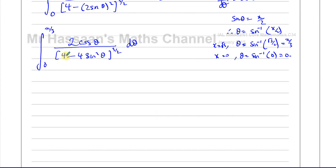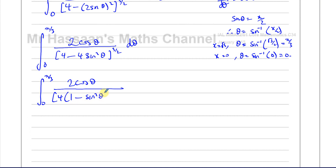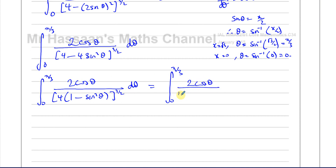Next, I can see there's a common factor of 4 inside the bracket, so I take it out: 4(1 minus sin²θ) to the power of 3/2. Now 1 minus sin²θ = cos²θ, so this becomes 4 times cos²θ, all to the power of 3/2. Still simplifying — I haven't started integrating yet.